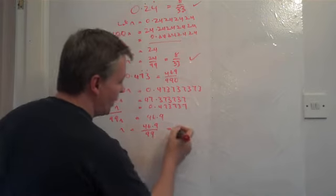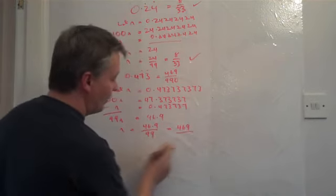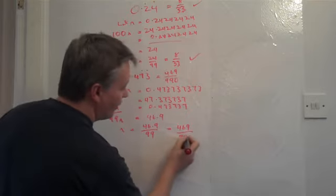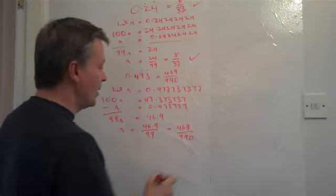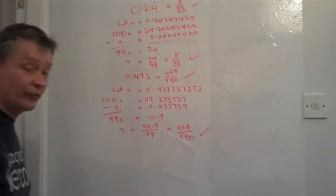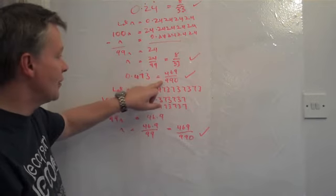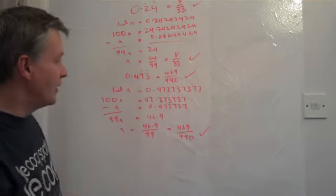Well, if I multiply the top by 10, that becomes 469. And if I multiply the bottom by 10, that becomes 990. So in other words, I've proved that 0.473 with the 73 recurring is the same as 469 over 990.